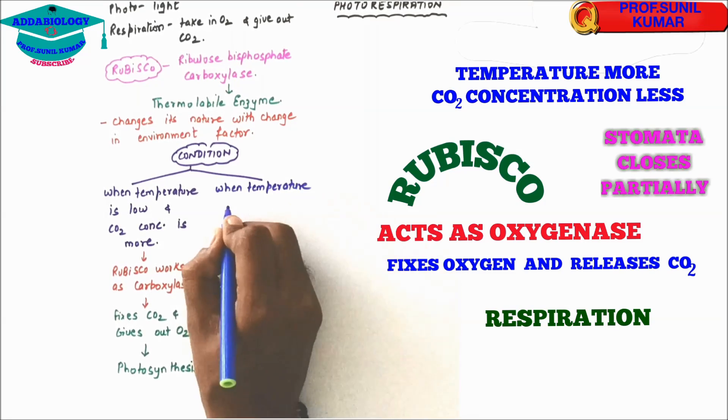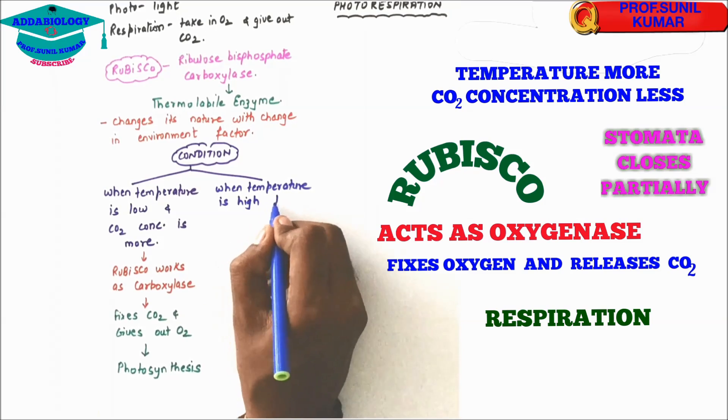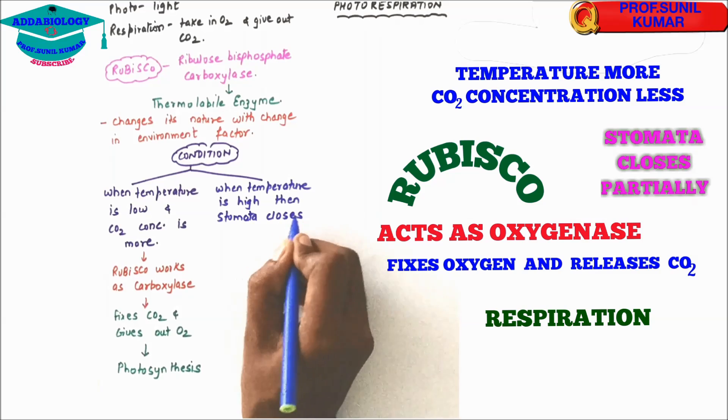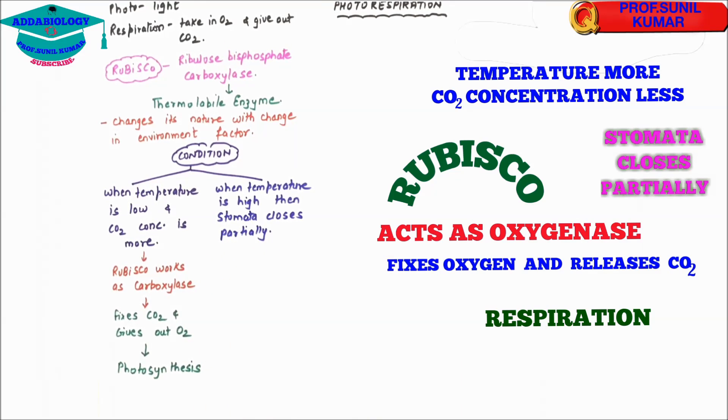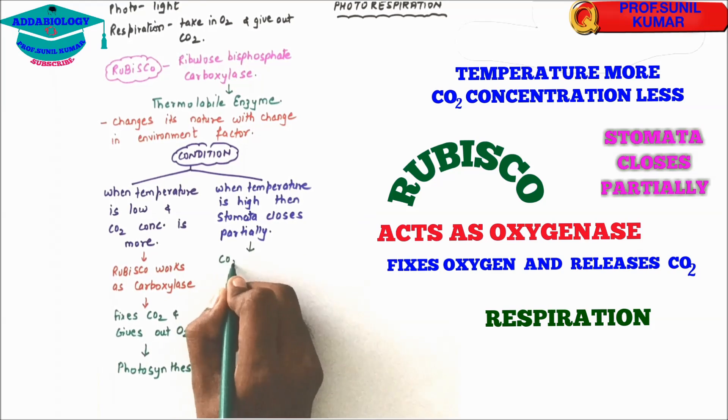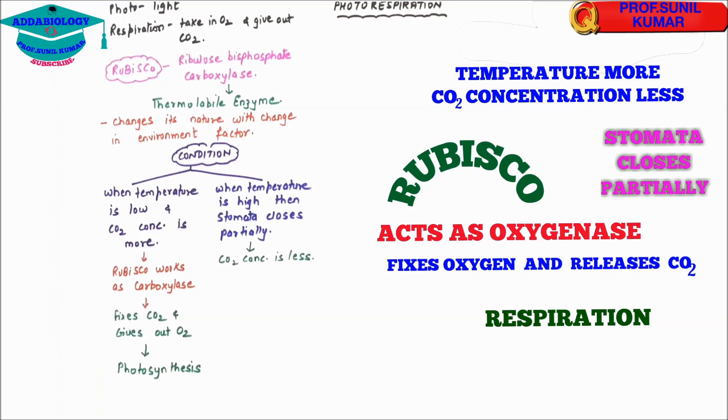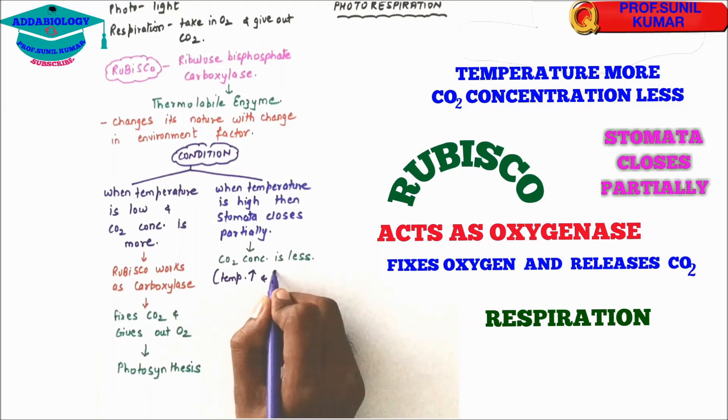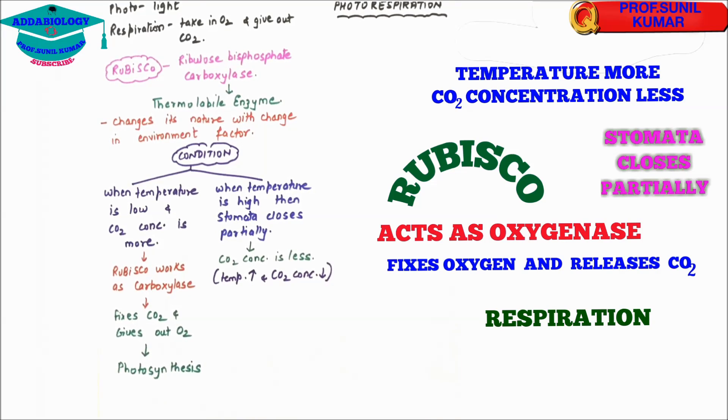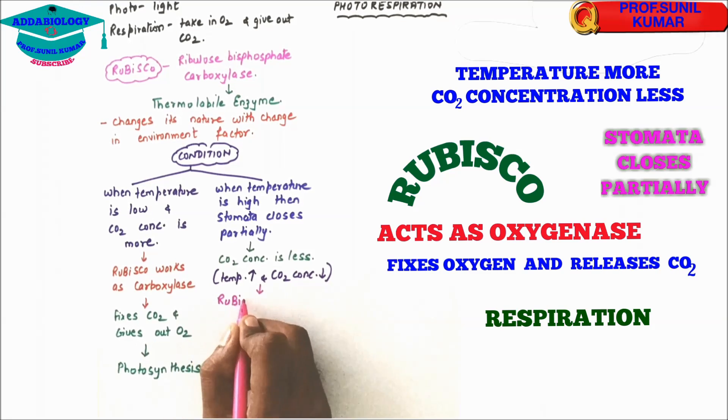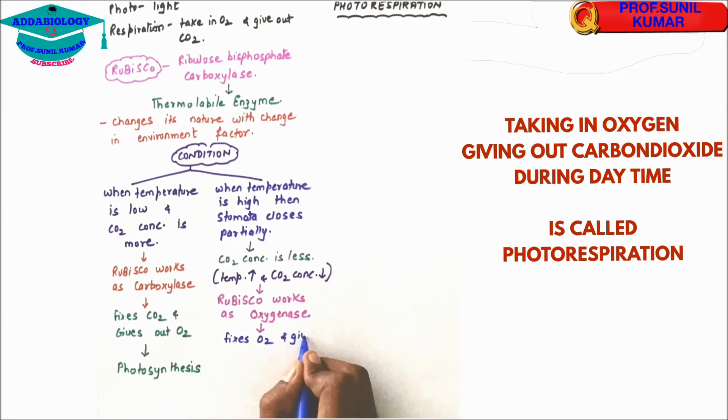But during afternoon, the temperature is very much high and the carbon dioxide concentration becomes less. Why? Because the stomata closes partially due to high temperature. Now rubisco here will work as oxygenase. Since rubisco is working as oxygenase, it simply means that it will take oxygen and it will give out carbon dioxide. So when carbon dioxide concentration is less and temperature is high, rubisco works as oxygenase. It means taking in oxygen and giving out carbon dioxide. So this process is called respiration. When this respiration takes place during daytime, it is called photorespiration.